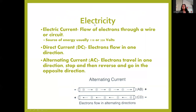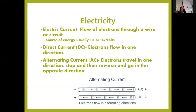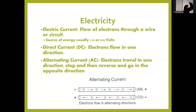An electrical current is a flow of electrons — electrons running up and down a wire in a circuit from the wall, either 110 or 220 volts depending on what you need. DC, or direct current, means the electrons flow in one nonstop direction. Alternating current, or AC, means they flow back and forth — the electrons travel in one direction, then stop and reverse in the opposite direction.